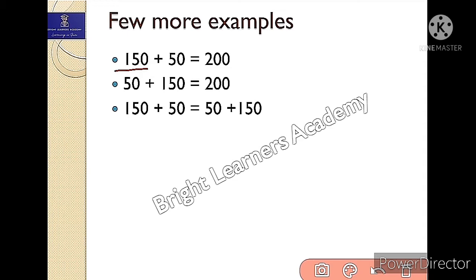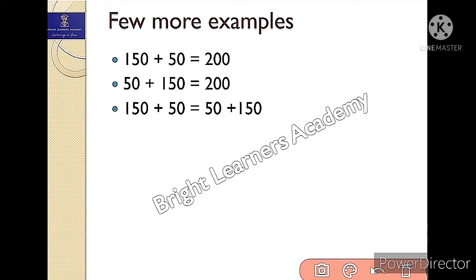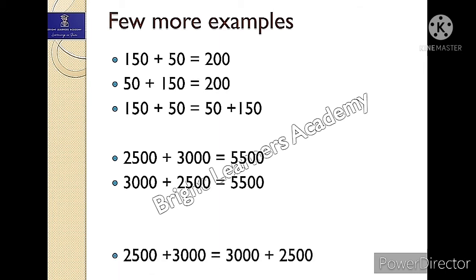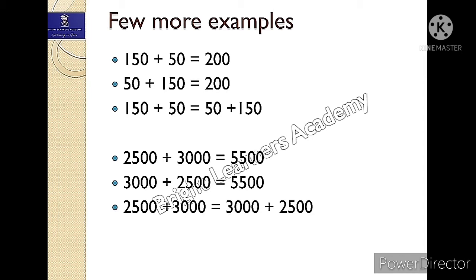Earlier I did 150 first, and now I did 50 first — I just changed the order. So I can say 150 plus 50 is equals to 50 plus 150. Let's take one more example: 2500 plus 3000 equals 5500. If I change the order and do 3000 plus 2500, the answer is still 5500. You can do it either way — 3 plus 5 equals 8, and 5 plus 3 is also 8. So I can say 2500 plus 3000 is equals to 3000 plus 2500.